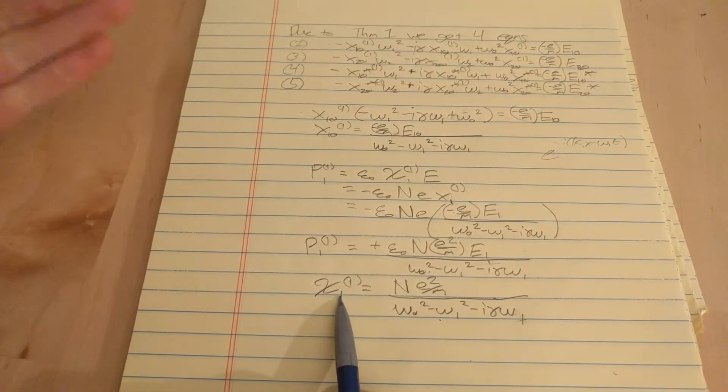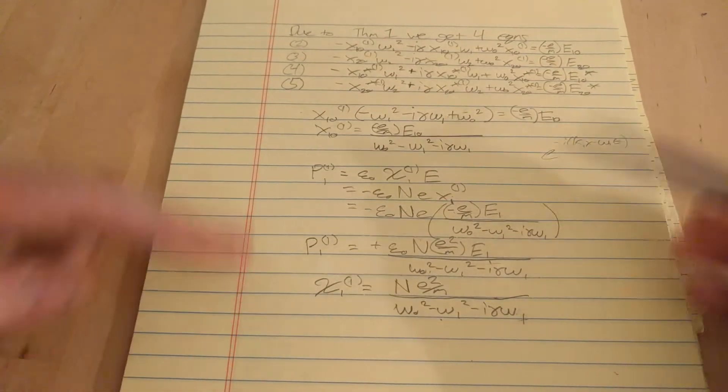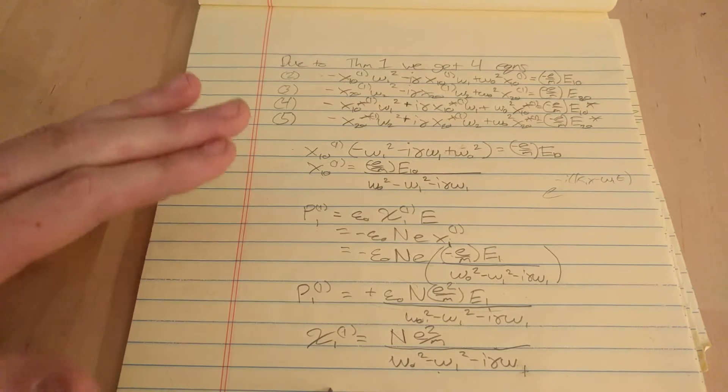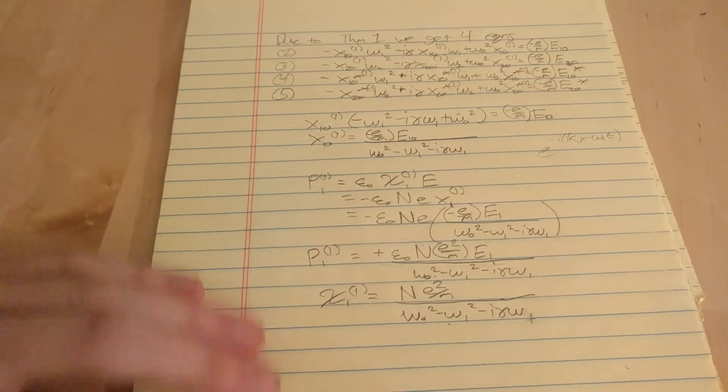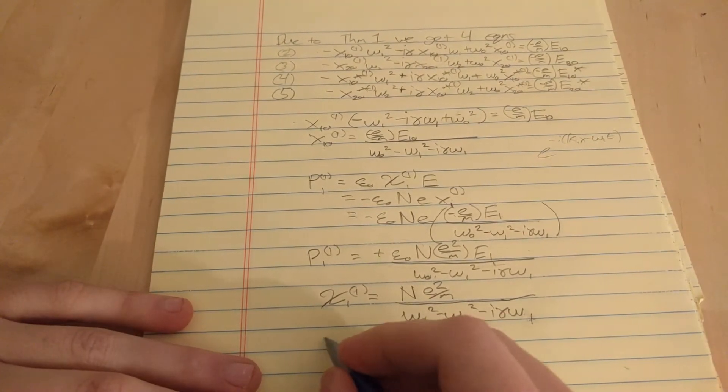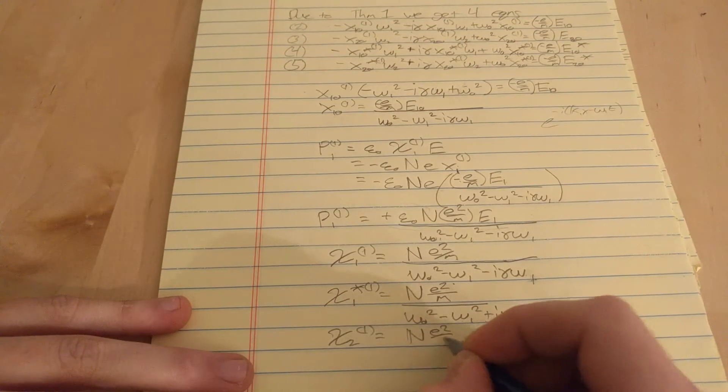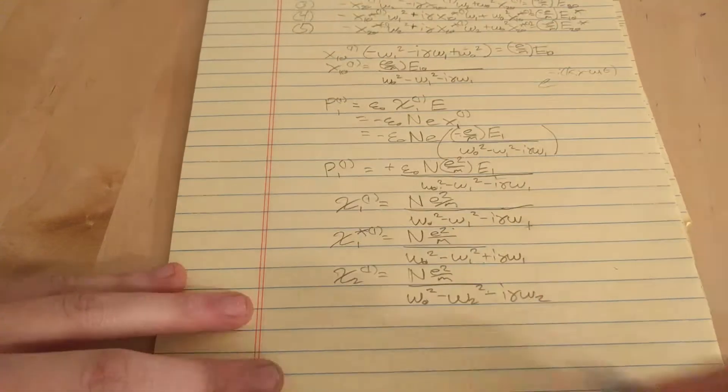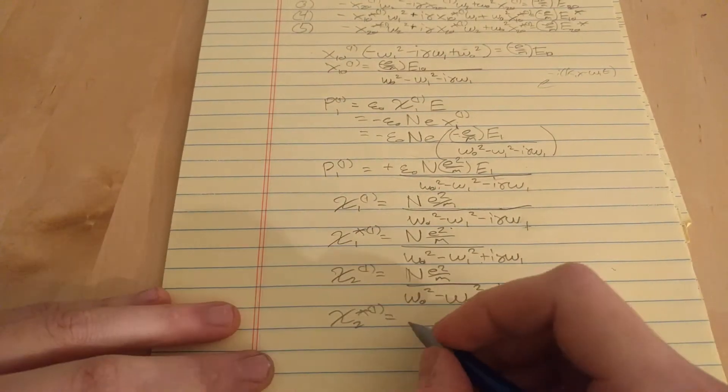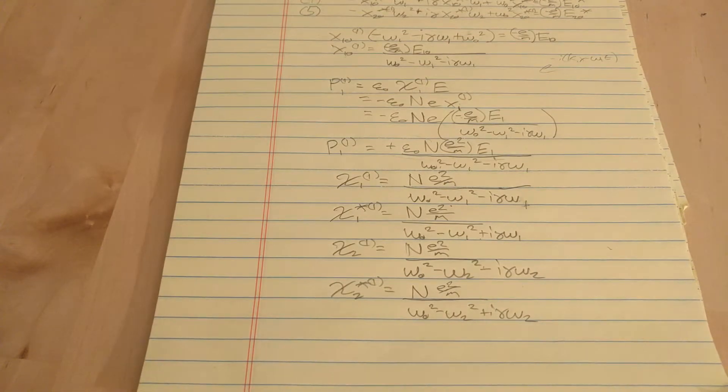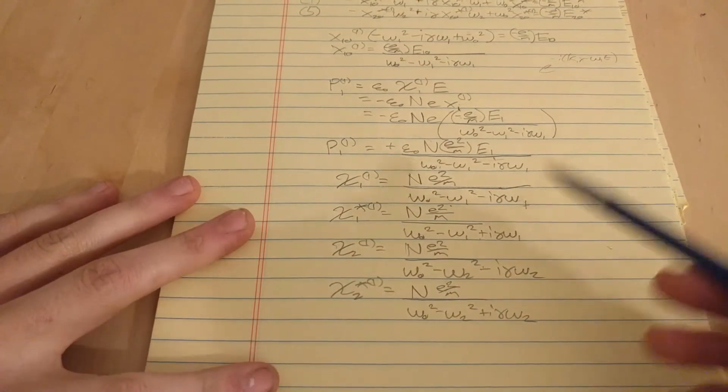And similarly, we can go through the same argument that we just did here, but except instead of x1-naught, we do 2-naught, and we also do the complex conjugates. And we're going to get the following susceptibilities. Okay, so that's all our susceptibilities.